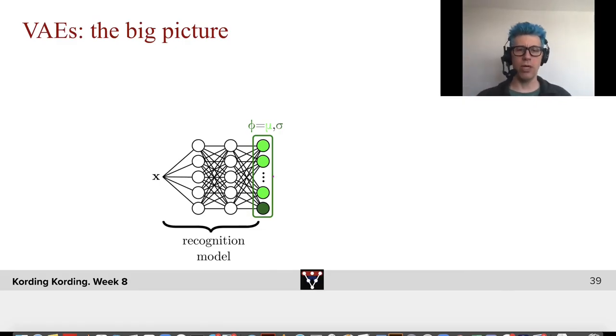We have a first part, a recognition model. And the recognition model will give us a vector of means and also a standard deviation.